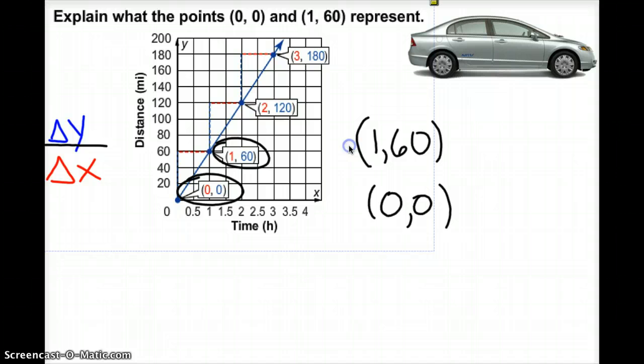When I talk about (1,60), it means that in one hour I've gone 60 miles. Another helpful tip is I'm going to label my y's in my coordinate pairs. I'm going to label my x in my coordinate pair.